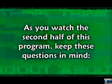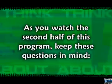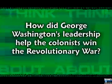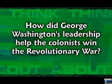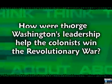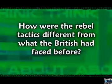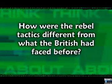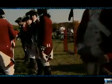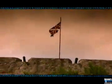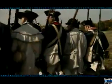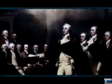As you watch the second half of this program, keep these questions in mind. How did George Washington's leadership help the colonists win the Revolutionary War? How were the rebel tactics different from what the British had faced before? The rebel colonists were going up against one of the most dominating armies in the world, and they knew the Redcoats would not be forgiving. To succeed, they needed a leader who would help them face the British head-on. George Washington was their answer.